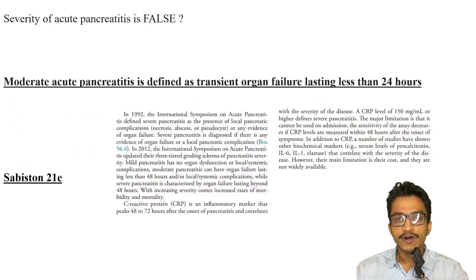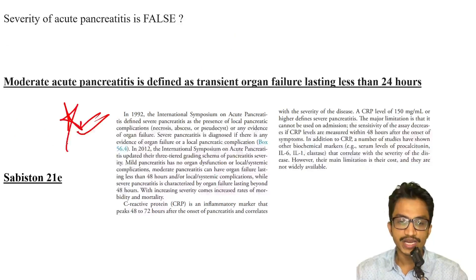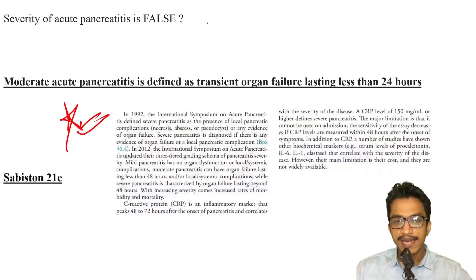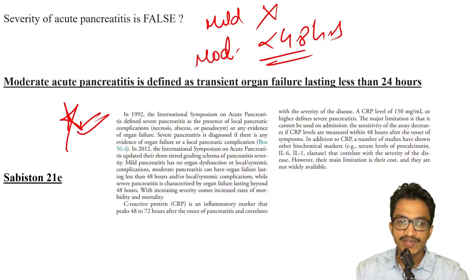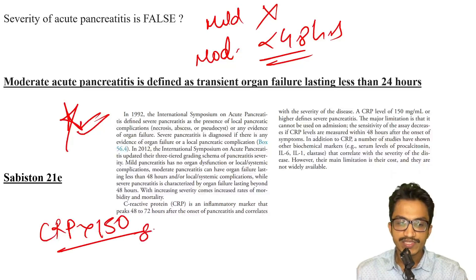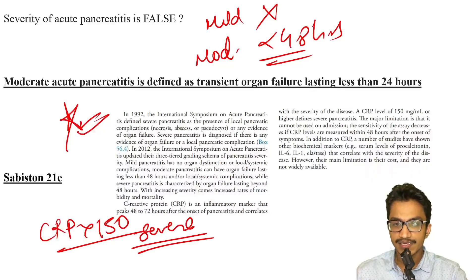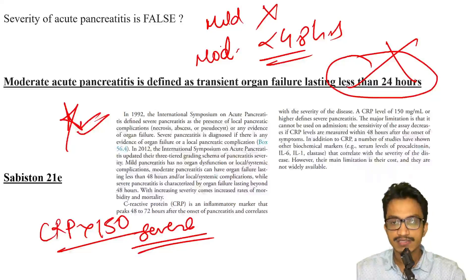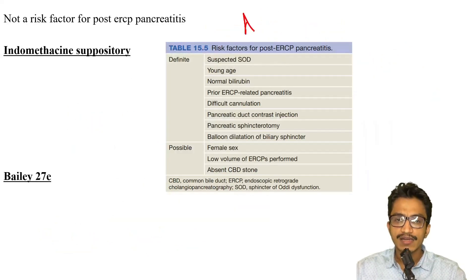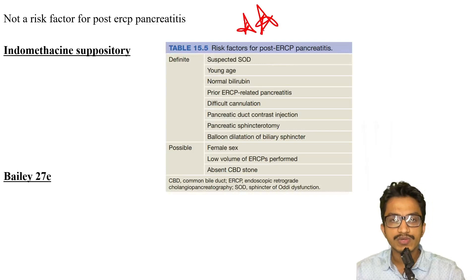Regarding the false statement about severity of acute pancreatitis — from Sabiston 21st edition — mild usually has no organ dysfunction, moderate has organ failure less than 48 hours, and severe is more than 48 hours. If CRP is increased it is usually greater than 150, termed severe pancreatitis. The wrong statement would be that moderate acute pancreatitis has transient organ failure lasting less than 24 hours — it should be less than 48 hours.